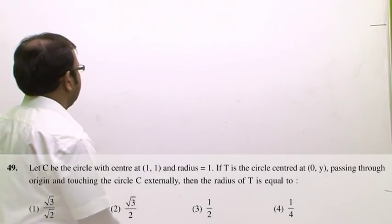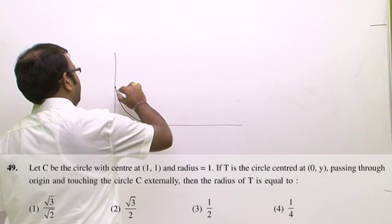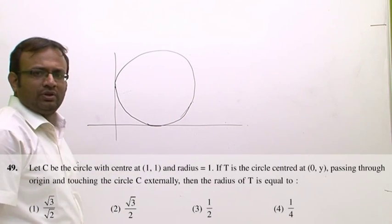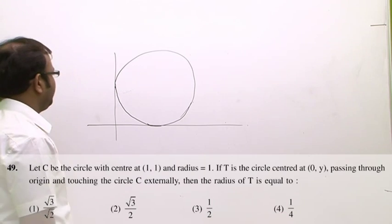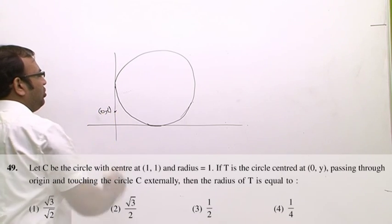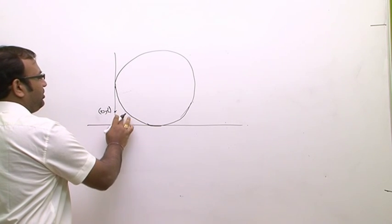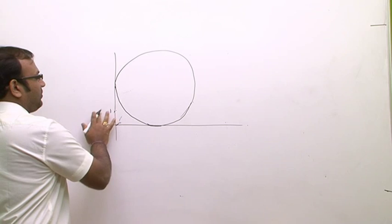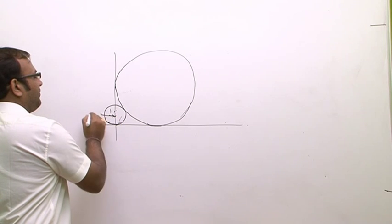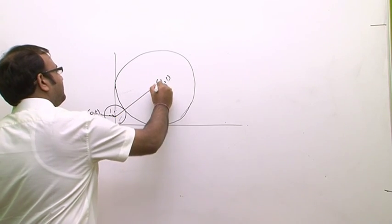Question 49: a circle has center (1,1) and radius 1, so it touches the coordinate axes. A second circle has center (0, t) and passes through the origin, giving it radius t. The two circles are externally tangent.